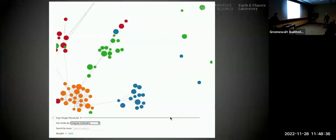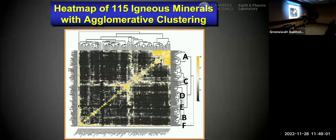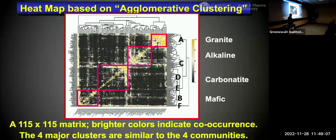Another way of representing this is agglomerative clustering — a hierarchical approach, very different from Louvain community detection. It asks which two minerals are most closely associated, and what's the next, and the next. Doing this with a 115×115 matrix, you again see very strong communities: the exact same four — granitic series, alkaline, carbonatite, and mafic — with a couple of small clusters containing just two minerals each, even though this is a completely mathematically different method.